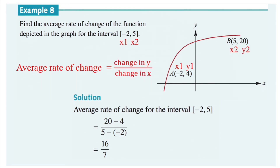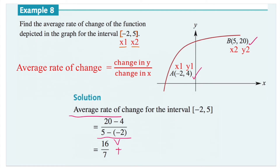Question 8: find the average rate of change of the function depicted in the graph for the interval [-2, 5]. These are the two x-values. The graph gives us the points (-2, 4) and (5, 20). Plugging into the formula: change in y is 20 minus 4, change in x is 5 minus negative 2. Be careful with the negative sign — minus a negative becomes plus — so this is 16 over 7. The average rate of change is 16 over 7.